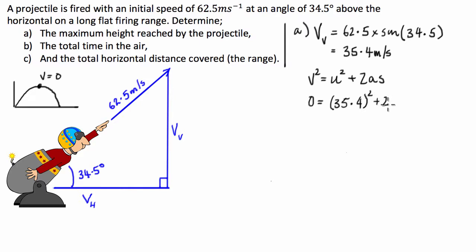plus 2, and acceleration is negative 9.8, because we're going in the opposite direction to the velocity, times the distance. So we can rearrange this formula and we can get that the distance is going to be equal to 35.4 squared,